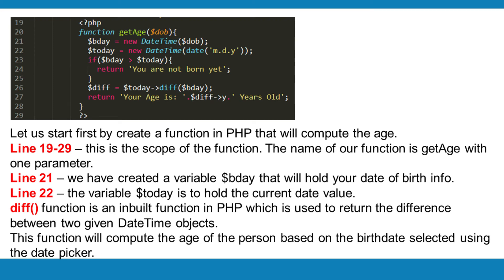Let us start first by creating a function in PHP that will compute the age. Lines 19 to 29 represent the scope of the function. The name of our function is getAge with one parameter. Line 21: we have created a variable $bDate that will hold your date of birth info. Line 22: the variable $today is to hold the current date value. The diff function is an inbuilt function in PHP which is used to return the difference between two given date time objects. This function will compute the age of the person based on the birth date selected using the date picker.